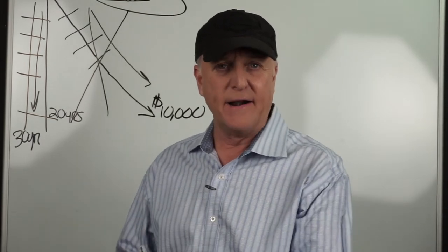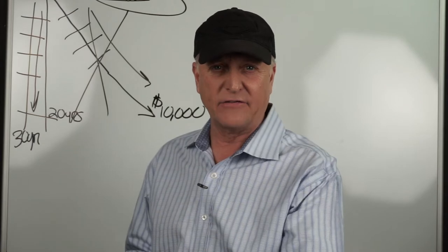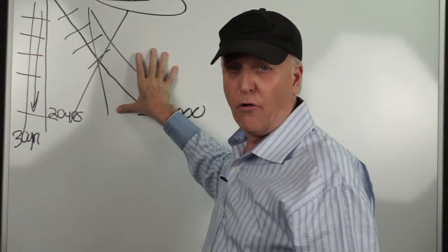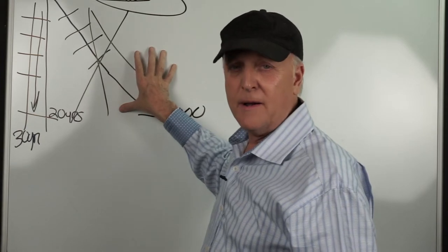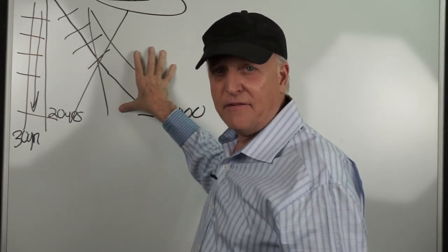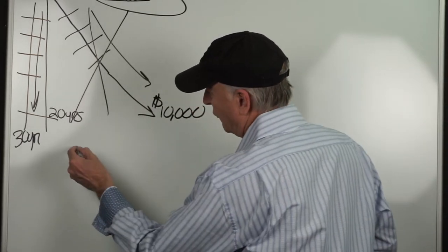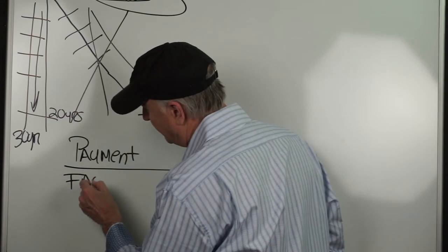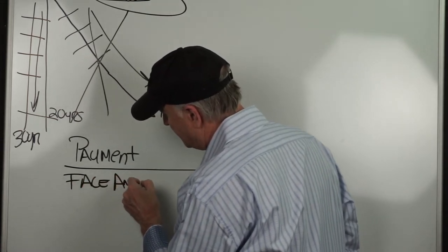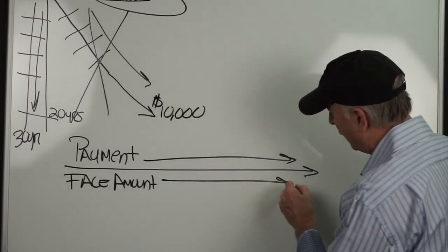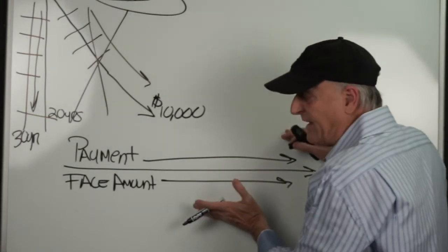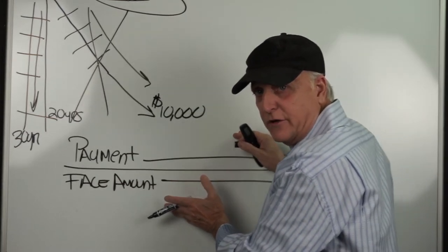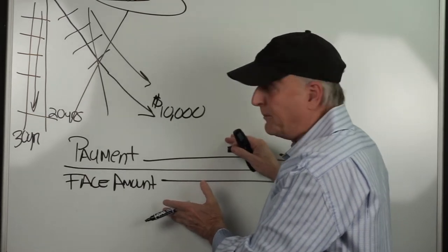We've talked about PMI, which is required if your loan-to-value is more than 80% or you put down less than 20% — it's required by the bank. We've talked about MPI, which is decreasing term and a horrific value. This is basically what we're selling against. Now here's what we put together for our folks: whatever payment we start with remains level, guaranteed not to change. And whatever face amount or coverage we choose is also guaranteed never to change — it's not going to go up or down. This is term life insurance.